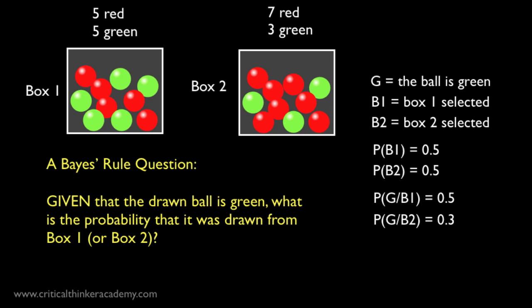A box is randomly chosen, we don't know which one, and a ball is drawn. The ball that we drew is green. Question. What is the probability that the ball came from box 1, or alternately from box 2?